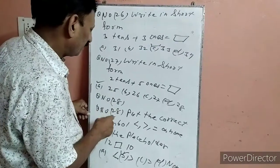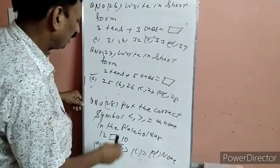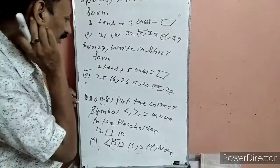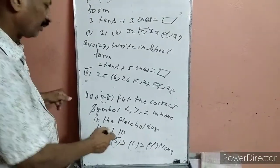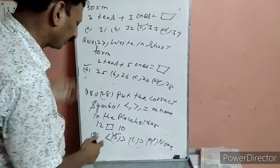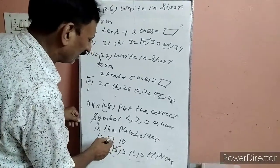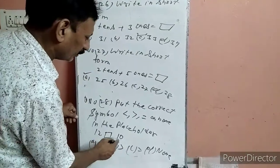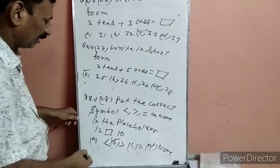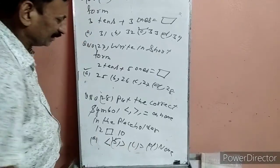Question 28: Put the correct symbol — less than, greater than, equal to, or none — in the placeholder. अगर first number, second number से छोटा है तो छोटा का sign, बड़ा है तो बड़ा का sign, equal है तो equal का sign, नहीं तो none. 12, 10 से बड़ा है, इसलिए greater than का sign लगा दिया.